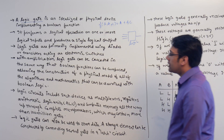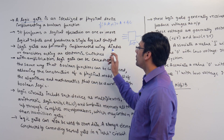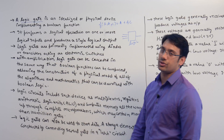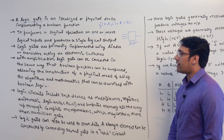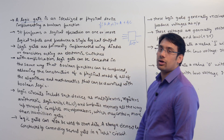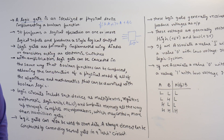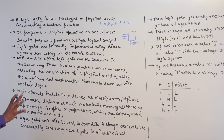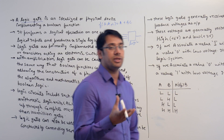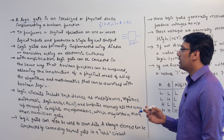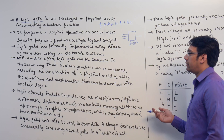Logic gates are primarily implemented using diodes and transistors. Diodes and transistors are not in the syllabus for gate computer science, but electronics and communication students study them. Just remember that logic gates are implemented using diodes and transistors, which act as electronic switches.